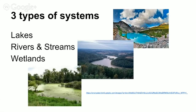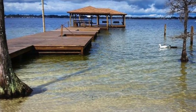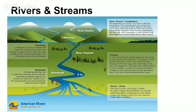Okay, so there's three types of systems: we have lakes, we have rivers and streams, and then wetlands. Lakes are bodies of water that are completely still. Rivers and streams are characterized by moving water. It's a stream if it's less than two meters deep, it's a river if it's more than two meters deep.